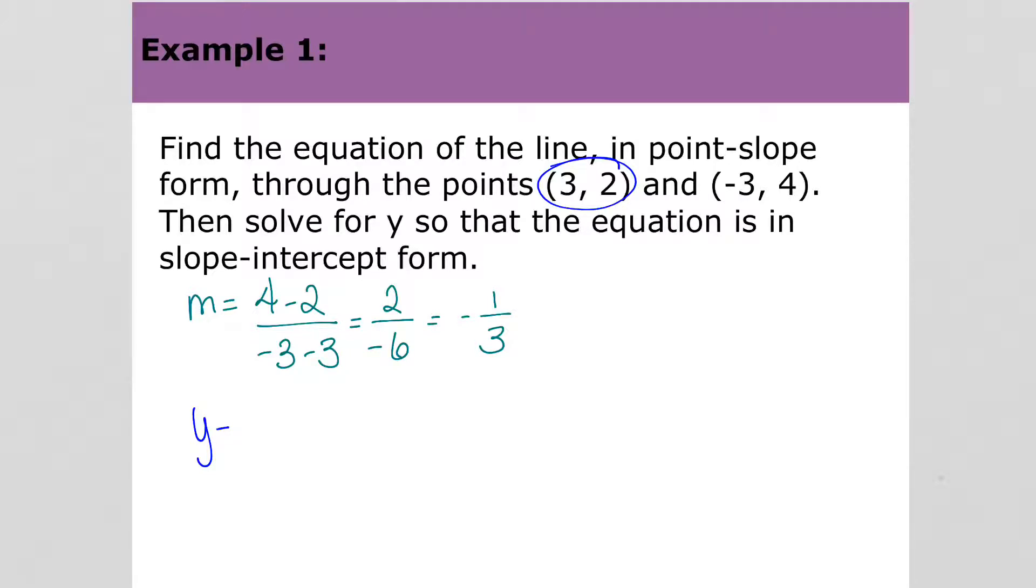We're going to use either point. Either point will, when we solve for y, get us the same thing. But I'm just going to use that first one. So the point (3, 2) has the y, 2 equals our slope, which is negative one-third times x minus 3.